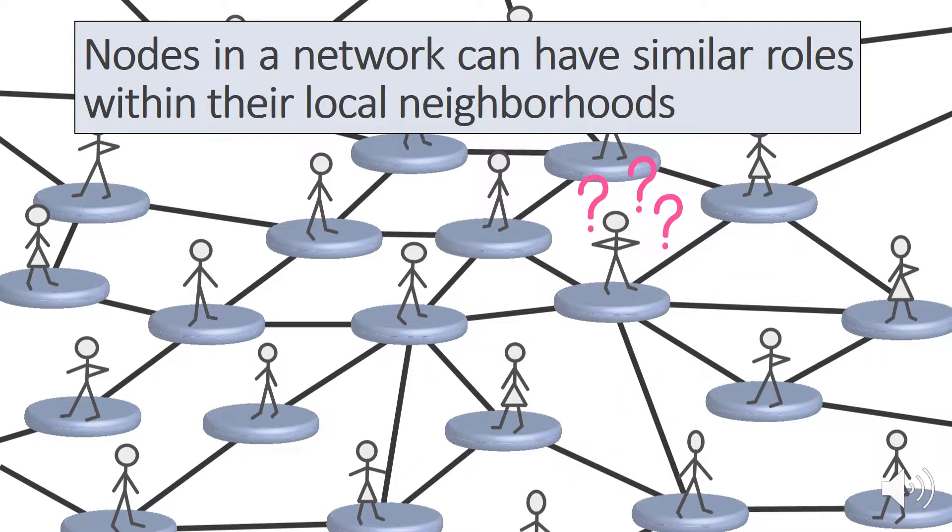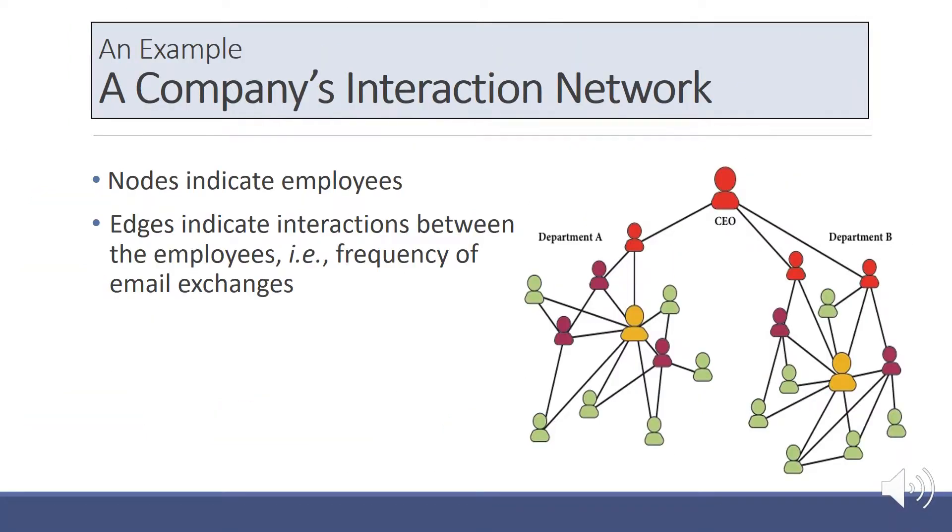In this work we focus on the analysis of structural similarities, that is information contained in the graph's topology and structure itself. Nodes in a network can have similar roles within their local neighborhoods. Take a company's interaction network for instance.